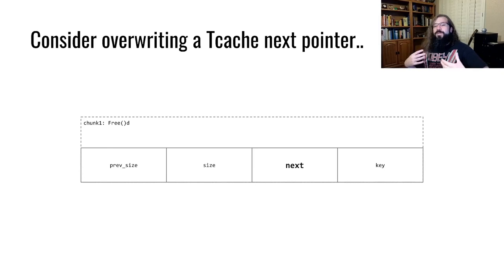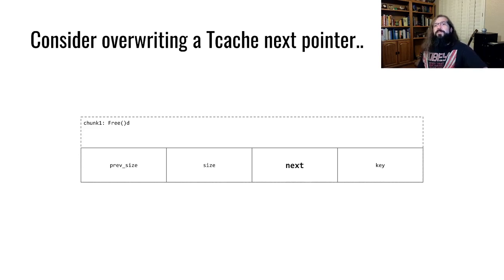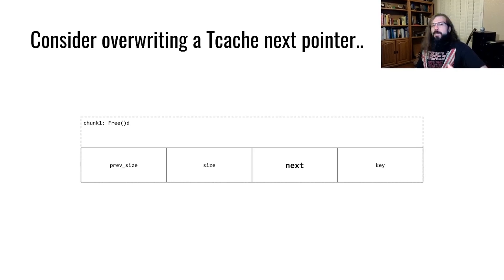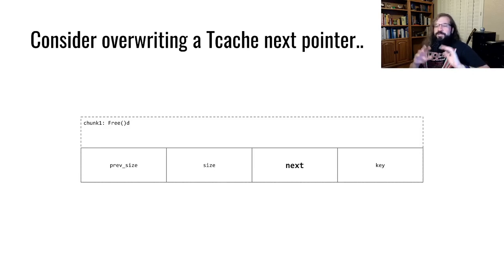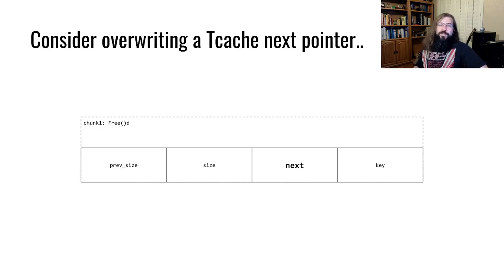We're going to approach this from the attacker's viewpoint. For an attacker doing a heap exploit, a very common juicy target is going to be a pointer on the heap — for TCache, it would be the next pointer. There are a couple of reasons the next pointer is interesting. First, if I can read that value, I can eliminate some randomness from ASLR on the heap and gain information about the layout of memory, which may be critical for pulling off an advanced heap exploit.